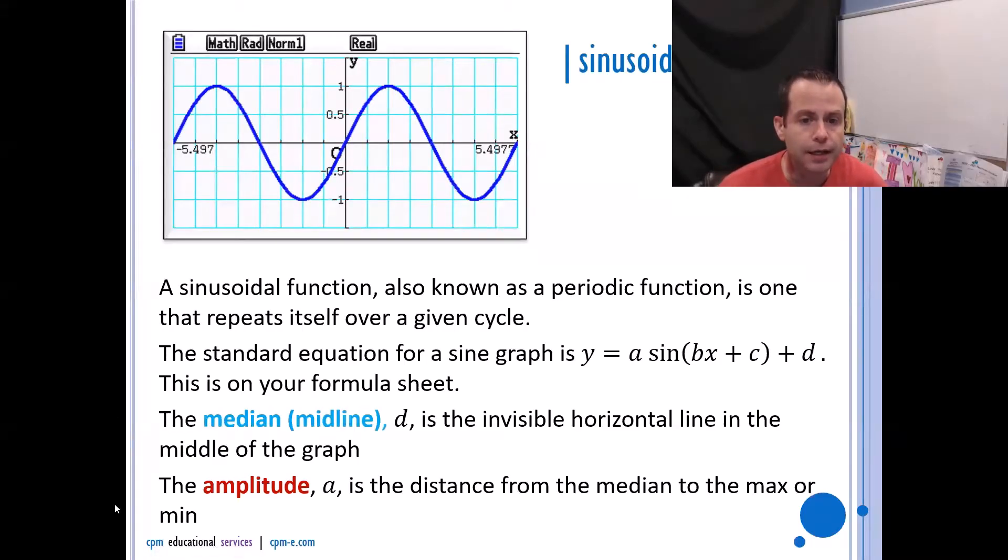The median line would be this guy right here in this example, and it's the invisible horizontal line in the middle of the graph. It's also your d value. So if you see an equation where it says sine of x plus 4, for instance, that would mean that invisible line is actually on 4 and then everything is going up and down based on that 4.